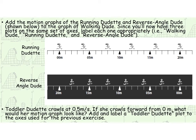So now you notice that we have two more motion graphs. We have running dudette and reverse angle dude. We want to add these to our already created graph of walking dude. So first let's look at this. This is running dudette. Every second looks like she is going 1, 2, 3, 4 meters. So it looks like she's going 4 meters in a second.